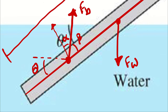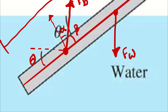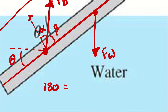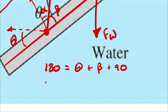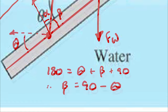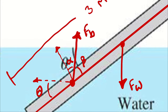So I can say that 180 is going to equal theta plus beta plus 90, because I know up is going to be perpendicular to horizontal. Therefore, beta is going to equal 90 minus theta. Therefore, beta is also this angle here.